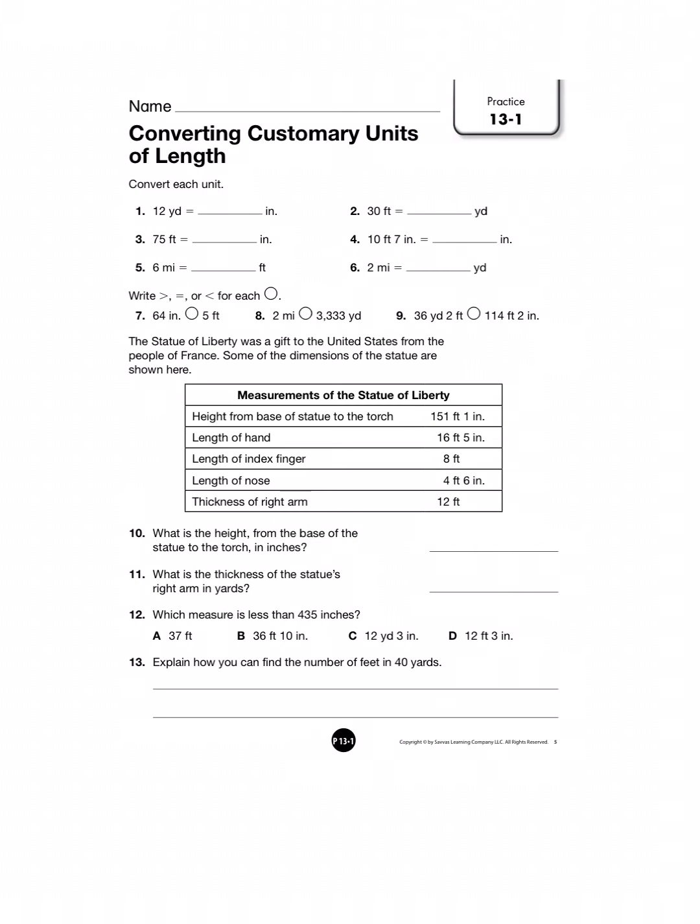We're going to begin with customary units of length. The difference between customary units of length and metric units of length is that customary units of length like the ones we use in the United States, inches feet and yards, are not based on units of ten the way metric units are.